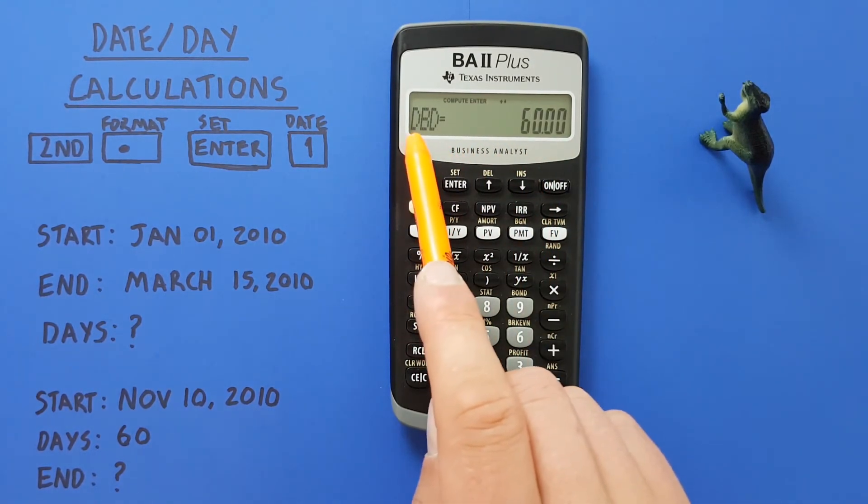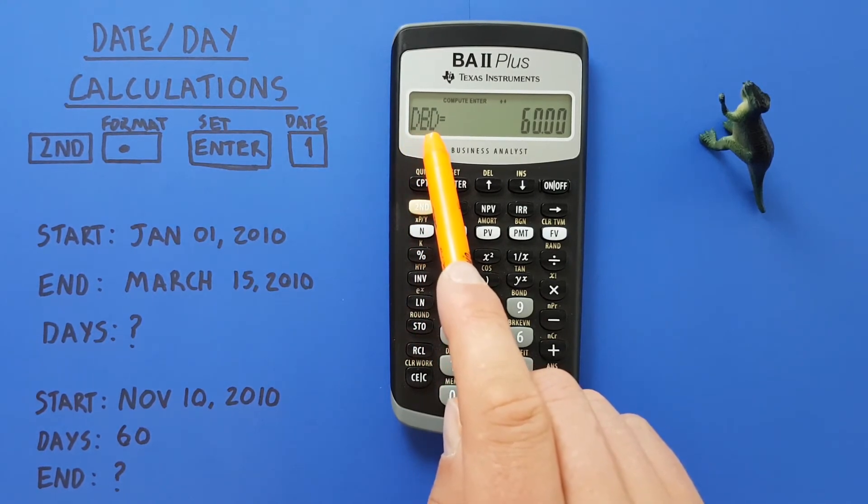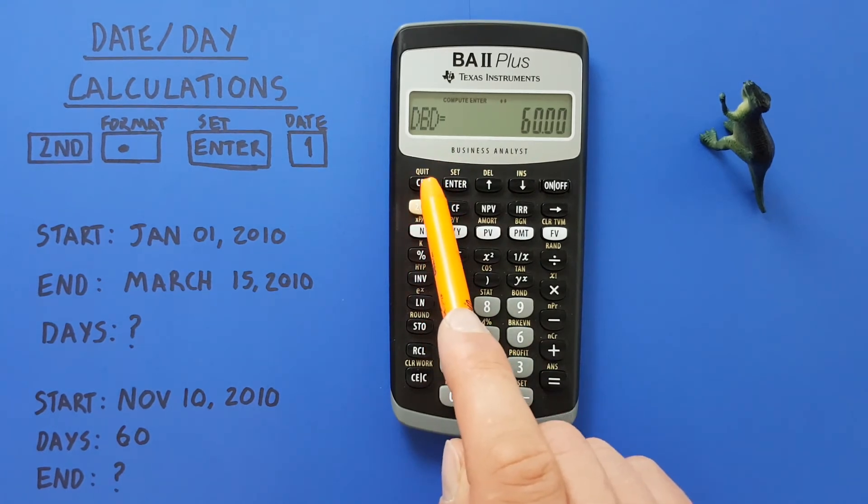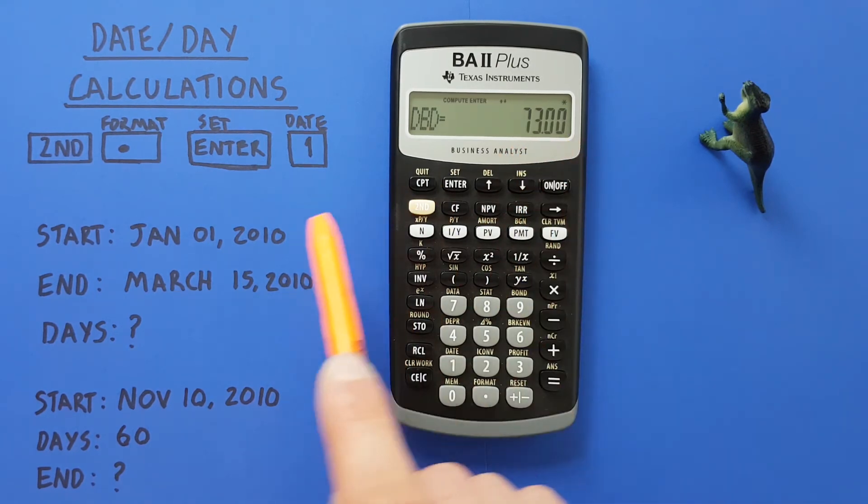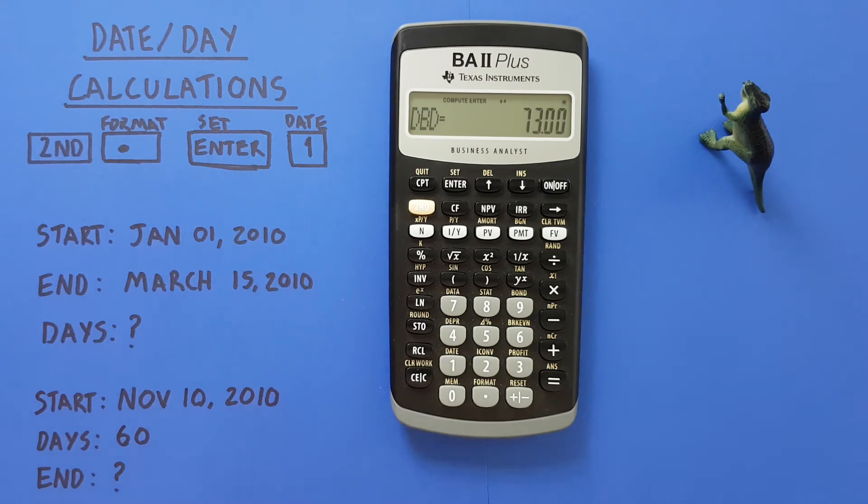There we go. Scroll down one more time and we get to DBD, which means days between dates. We want to determine this, so we press the CPT or compute key, and we get 73. So we have 73 days between January 1st and March 15th to get our project done.